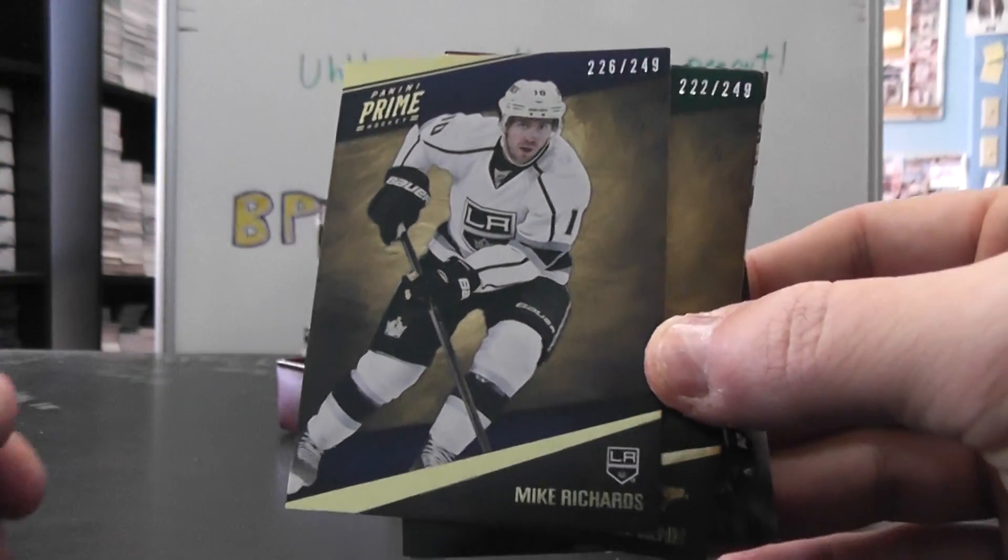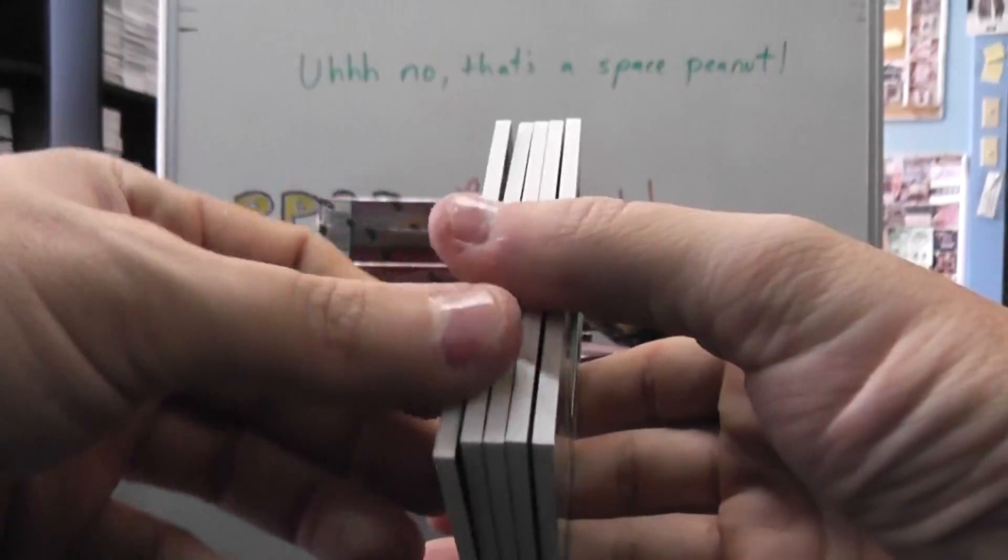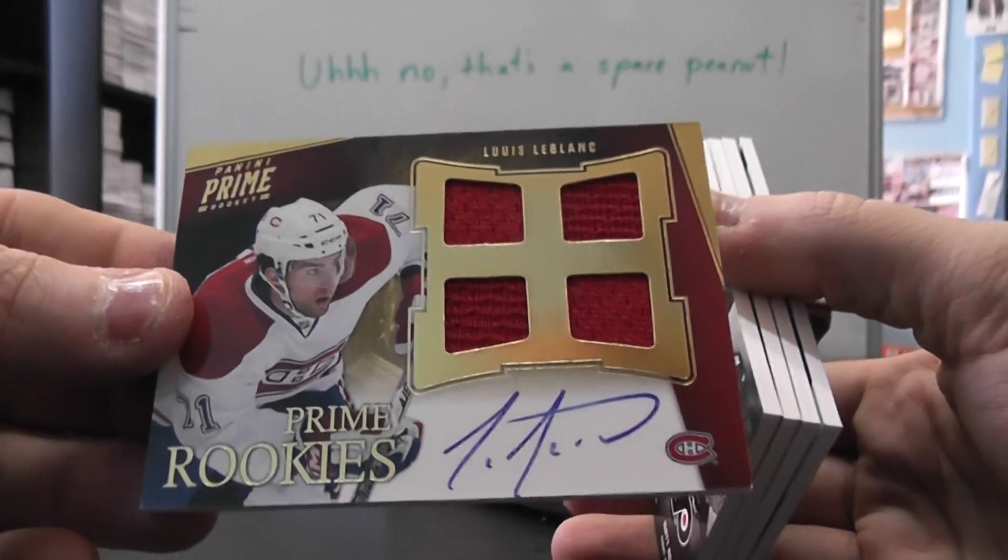We have Mike Richards $249, Jamie Benn $249, Louis LeBlanc $199 quad jersey autograph.